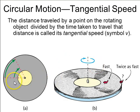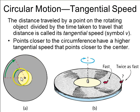So it turns out that if you have one rotating object, the distance traveled by a point on that object is called the tangential speed, and that is greater for objects closer to the edge or the circumference, and it's smaller for points that are closer to the center.